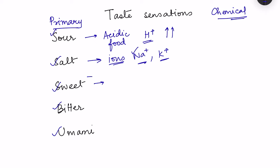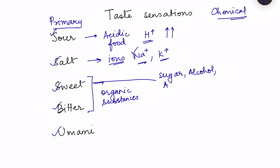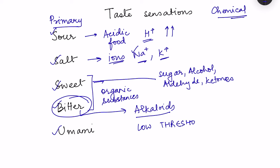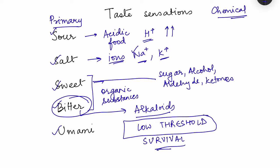Sweet and bitter are both caused by organic substances. For sweet, many substances are involved — sugars, alcohol, different types of aldehydes, and even ketones are all sweet. Bitter taste is caused by alkaloids. It is very important that bitter taste has a very low threshold — even if present in food in very small concentration, it can be detected, and this has survival value. Alkaloids are actually present in poisonous substances found in plants, so evolution of this low threshold of bitter taste sensation allows us to reject foods which we find bitter.